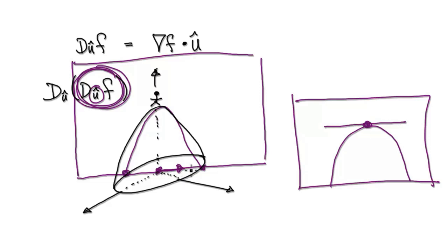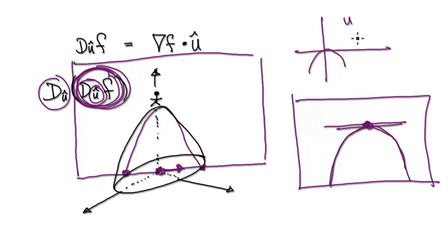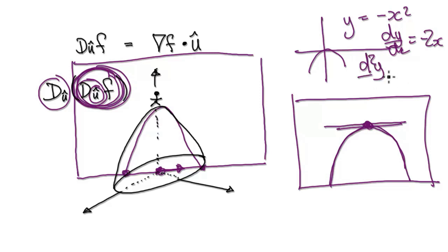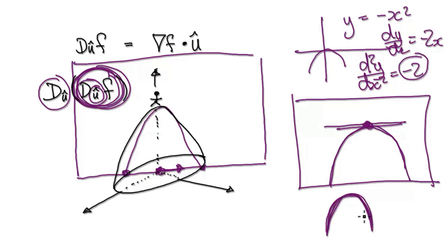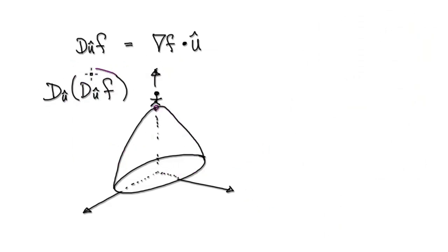Here we're just looking at the origin for simplicity, but it could be anywhere. The directional derivative gives you the gradient. If you take the directional derivative of a directional derivative, it gives you the concavity. From single-variable calculus, if you have y = −x², differentiating gives dy/dx = −2x (the gradient). Differentiating again gives −2: a negative concavity means it always bends downwards. Conversely, a positive concavity means it always bends upwards.